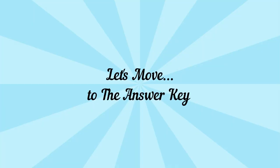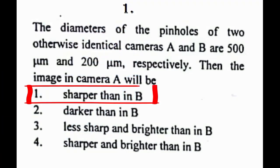So this is our paper. Here is problem number 1: The diameters of the pinholes of two otherwise identical cameras A and B are 500 micrometers and 200 micrometers respectively. Then, the image in camera A will be? The correct answer to this problem is option 1, sharper than in B.